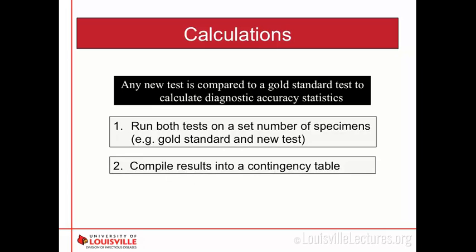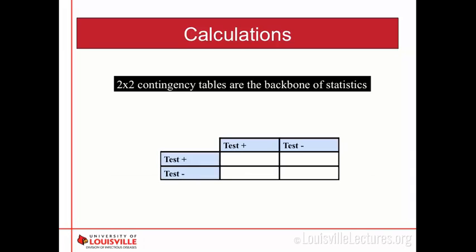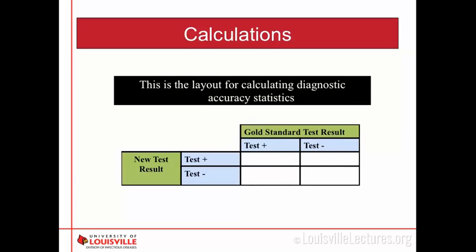Brian kind of touched on it, and I'm going to go over it again. If you've ever taken a statistics class, the 2x2 contingency table is pretty much what they beat into your brain. It's composed of a positive and negative arrangement — hence a 2x2 table. You put your gold standard test results on the top with positive and negative columns, and the new test goes on the left side.